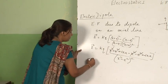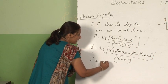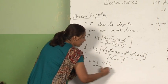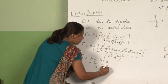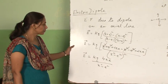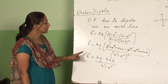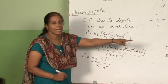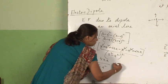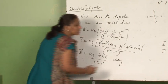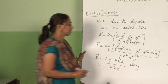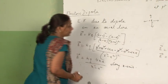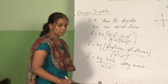After cancellation we have E is equal to kq times 4xa upon (x² minus a²) the whole square, and the direction is along the x-axis. Because electric field is a vector quantity, we must always specify the direction.